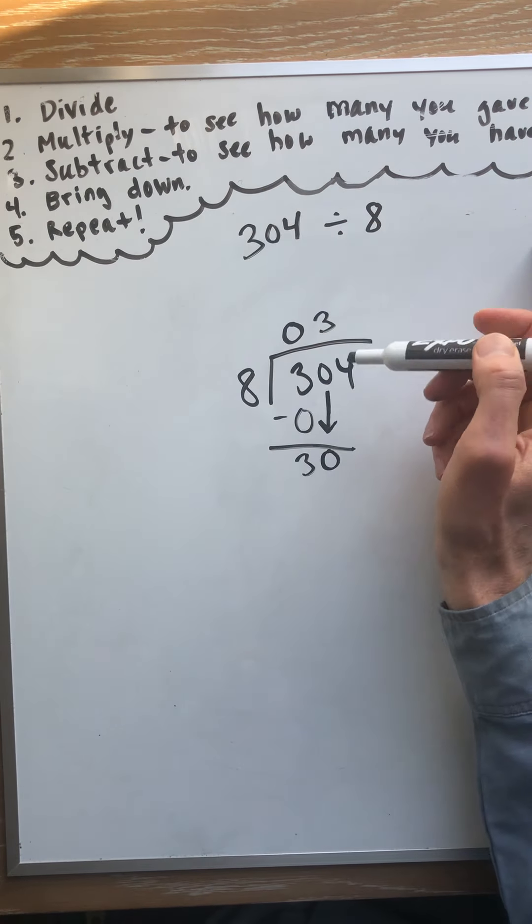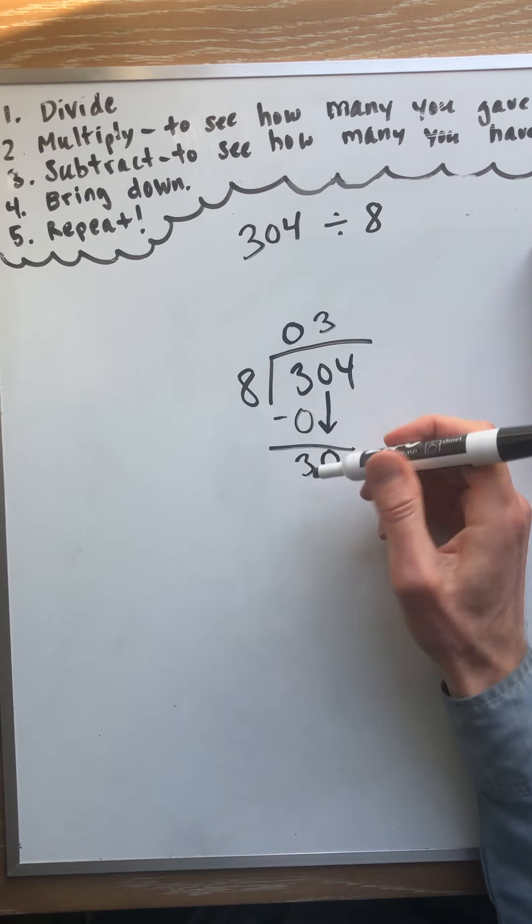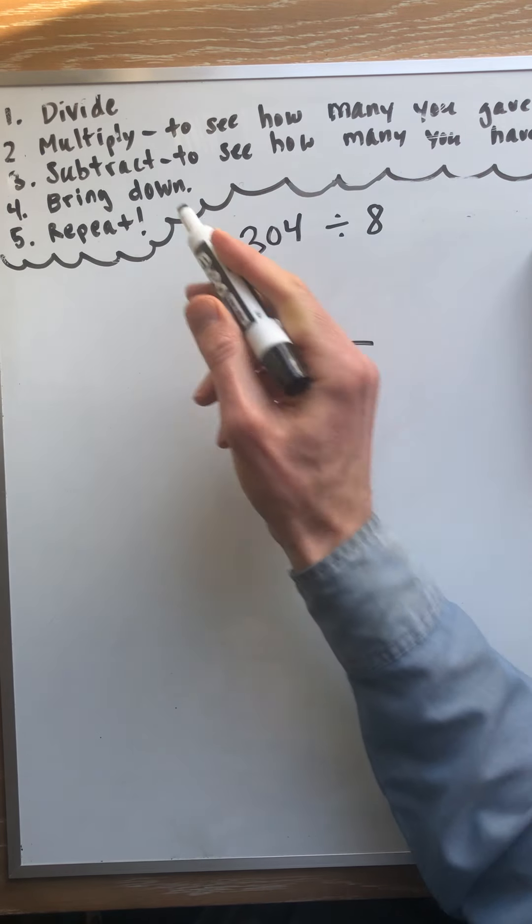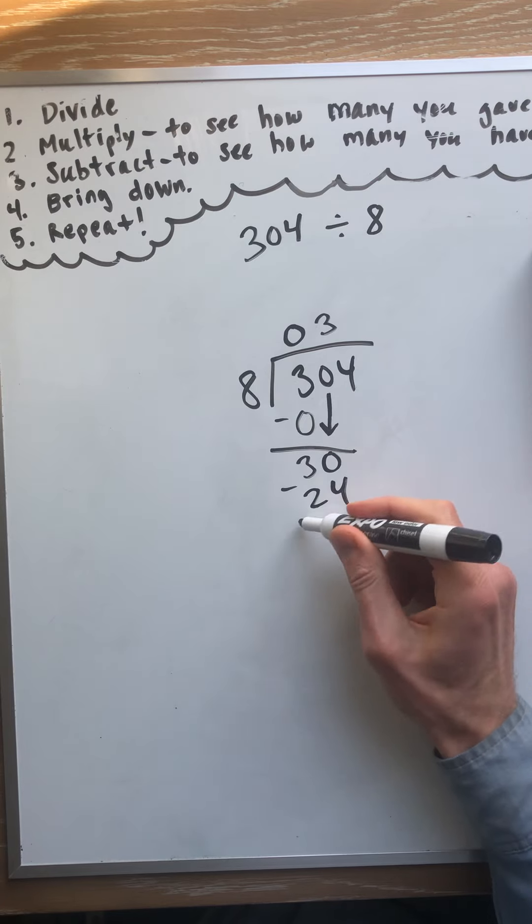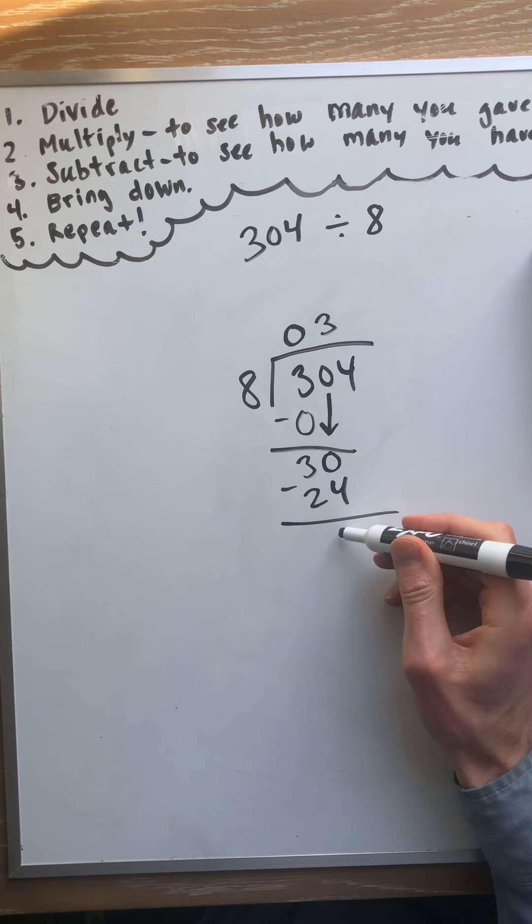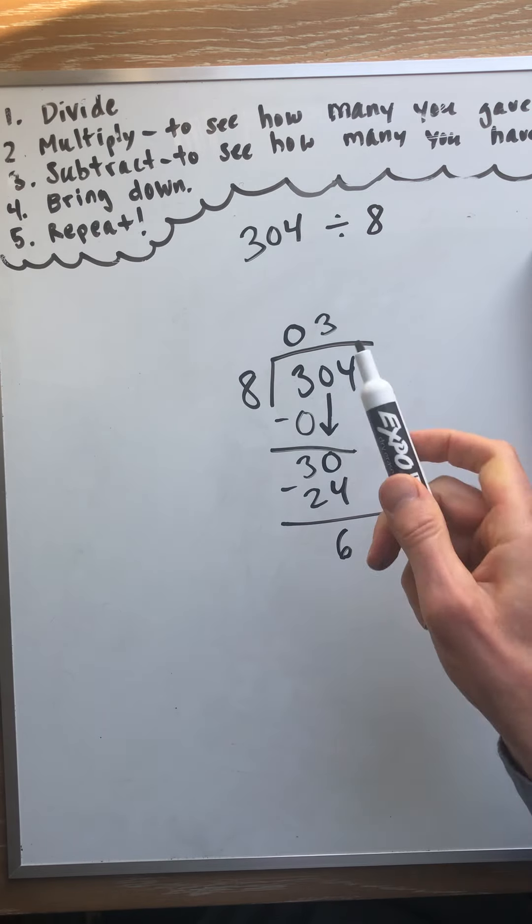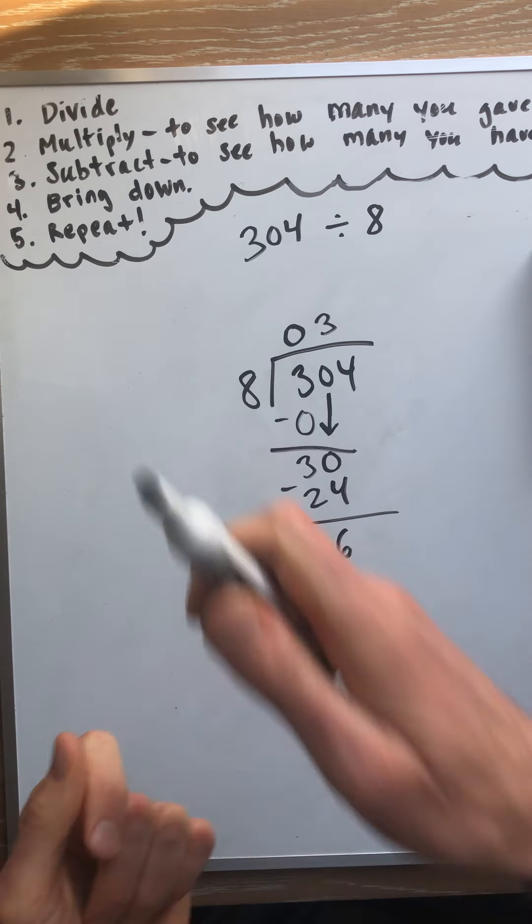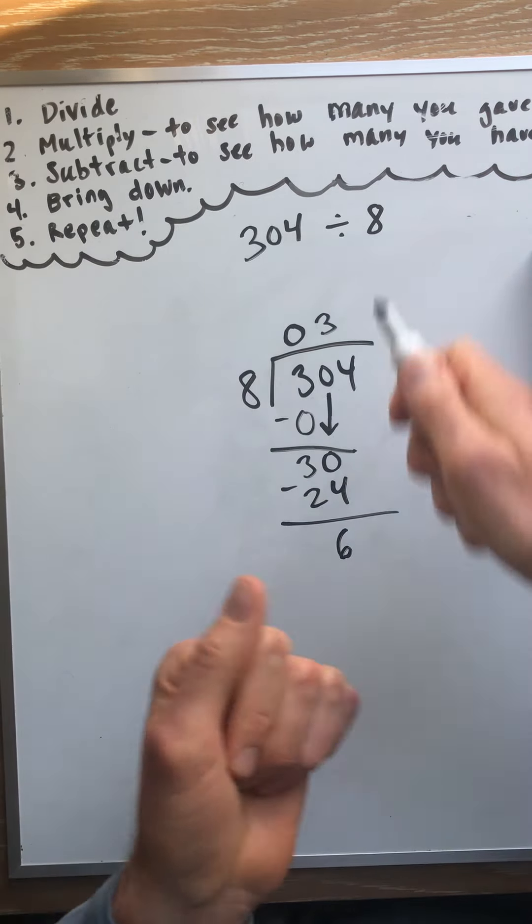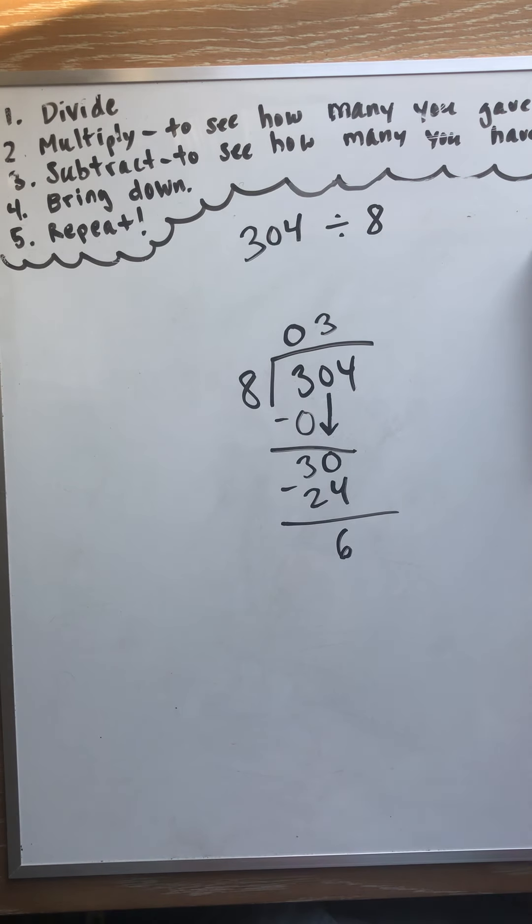And now multiply to see how many we gave out. Well, we just talked about 8 times 3 is 24. Subtract to see how many have left. 30 minus 24 is 6. So we have the 8 people. They each got 3 tens. They're like, oh, yeah, finally we're getting something. We're getting some money. Each person got 3 tens.